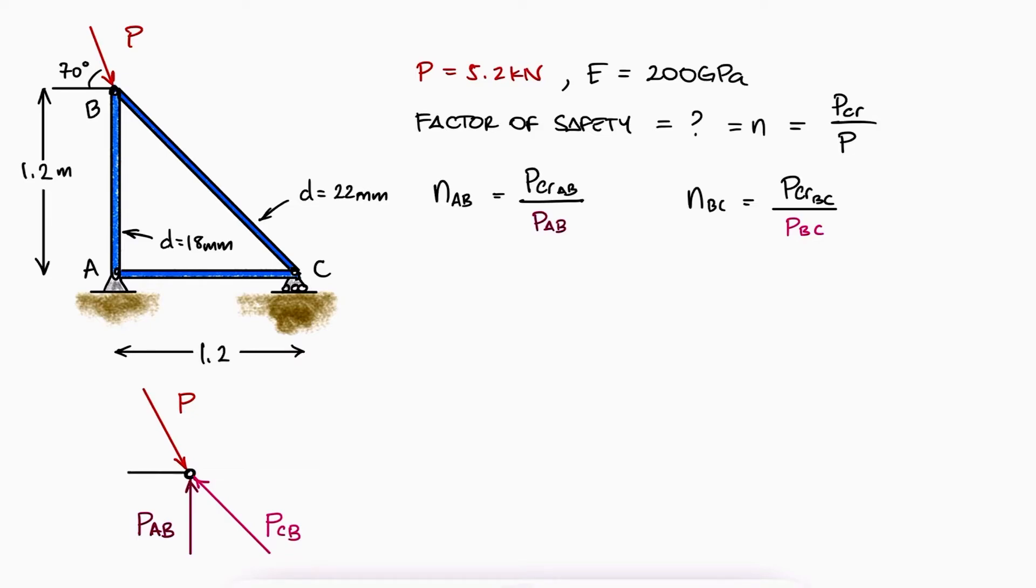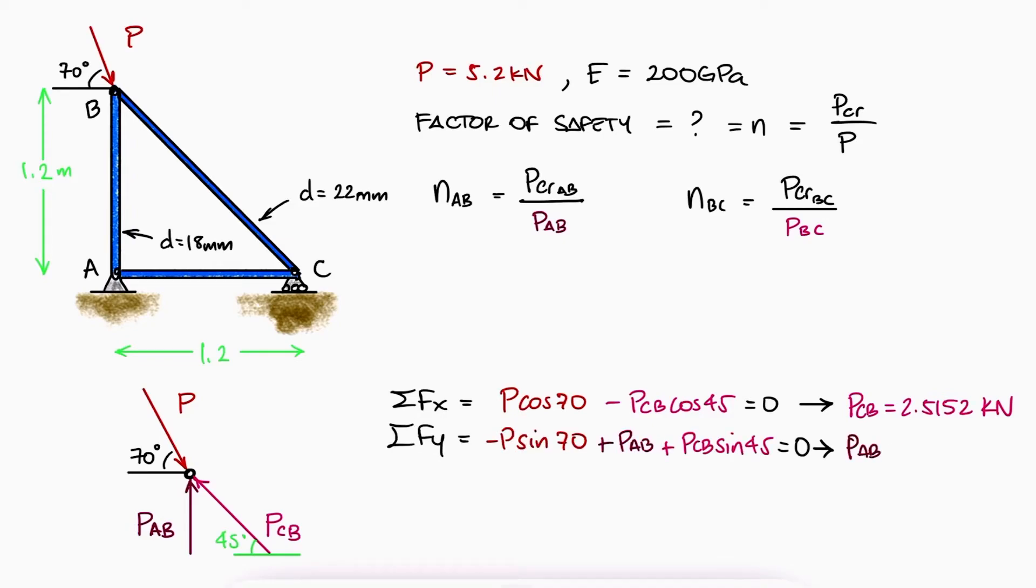The 70 degree angle was given and because of the 1.2 meter dimensions, we know that the angle for PCB is 45. A sum of forces in X allows us to find the value for PCB and a sum of forces in Y for PAB.